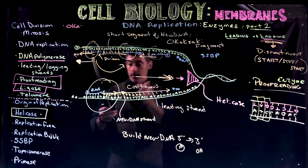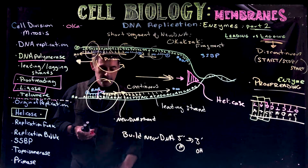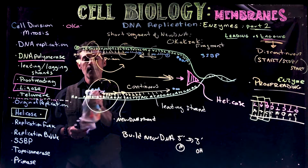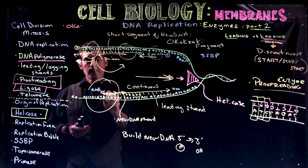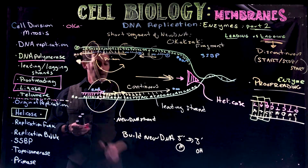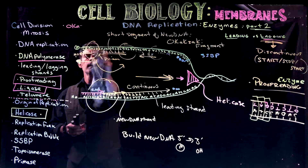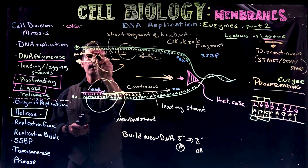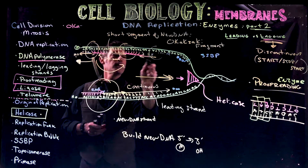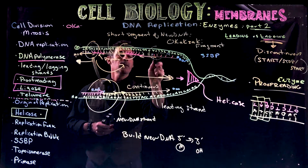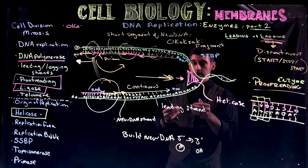The same thing happens when the proofreading enzyme hits the RNA primers. It says: wait, that's not even the right kind of nucleotide. It doesn't matter what the nitrogenous base is — it pulls those out. The proofreading enzyme replaces all the RNA primers, cutting them out and replacing them all with proper DNA nucleotides all the way through, giving two new fully DNA double strands.